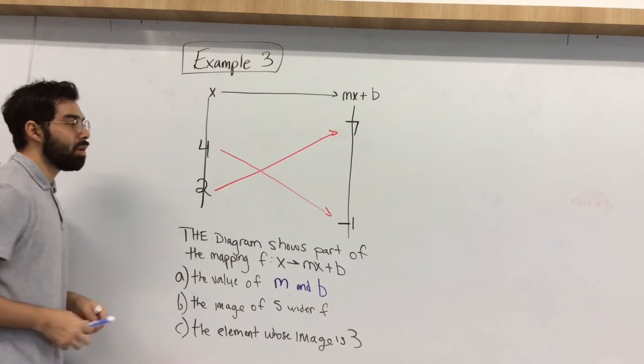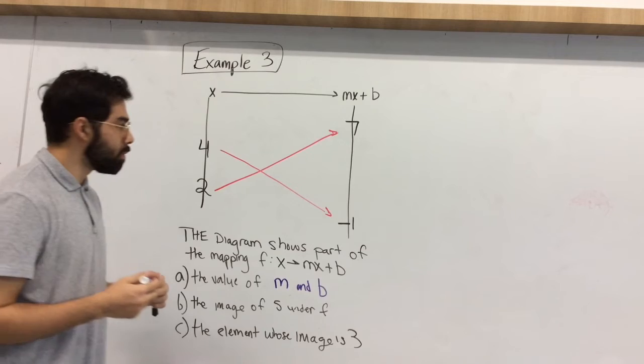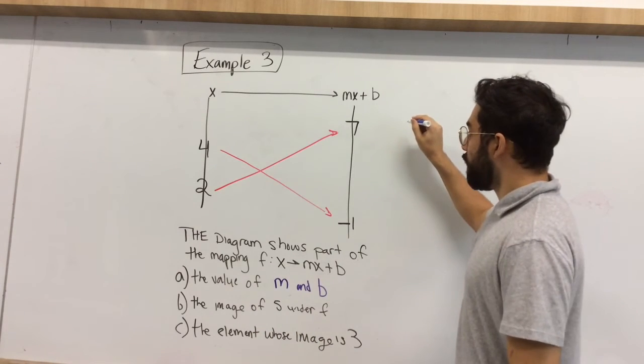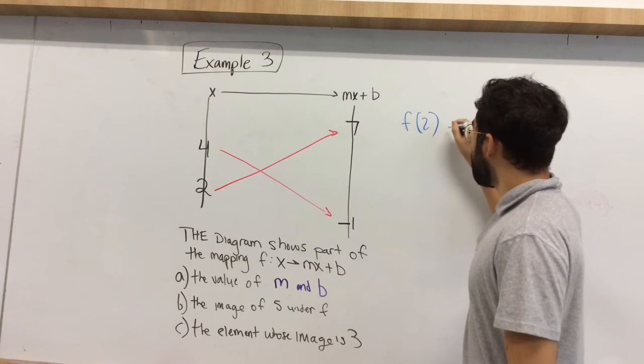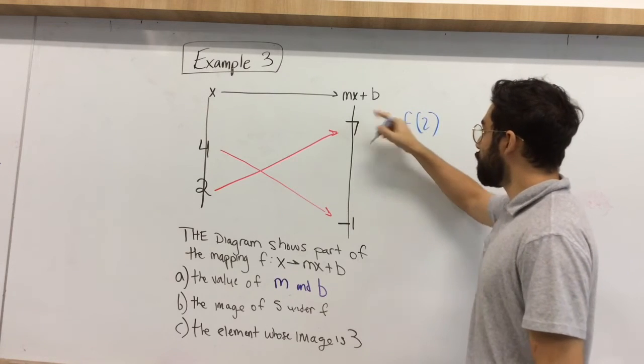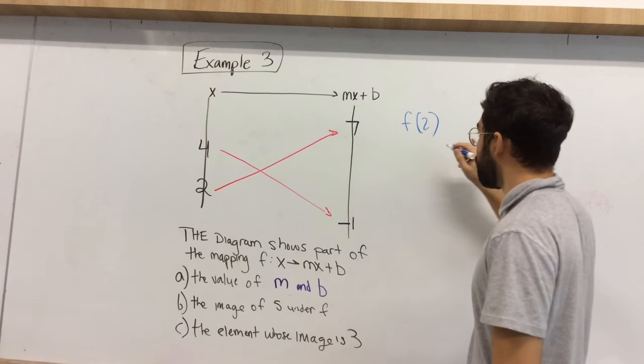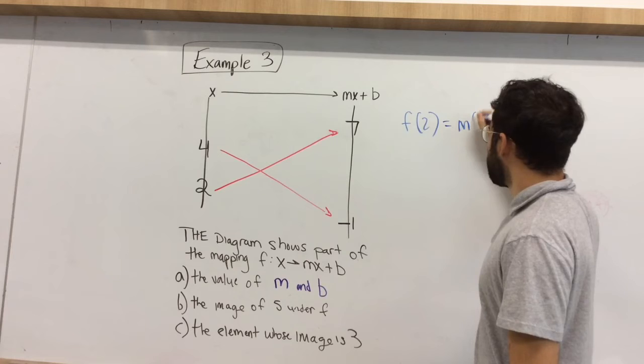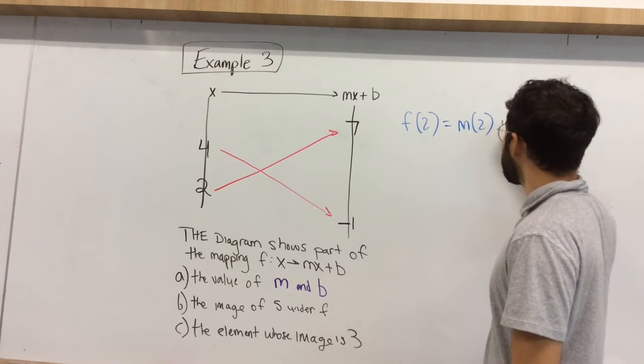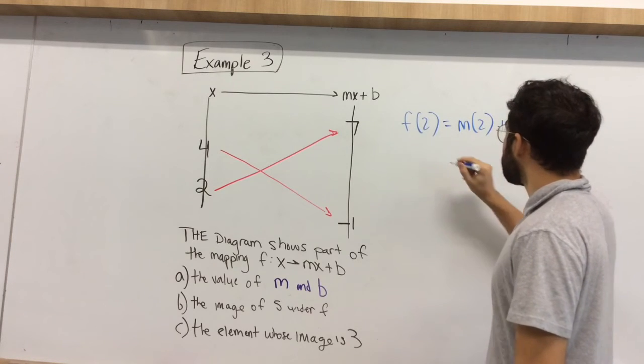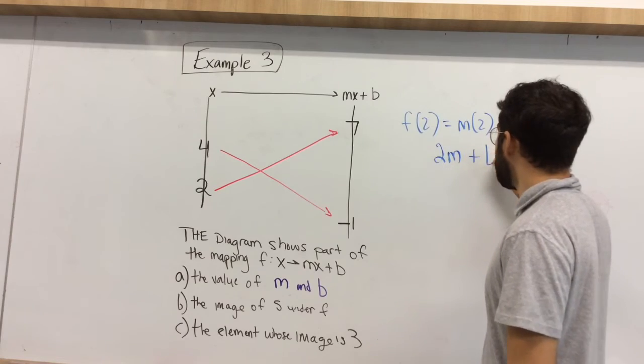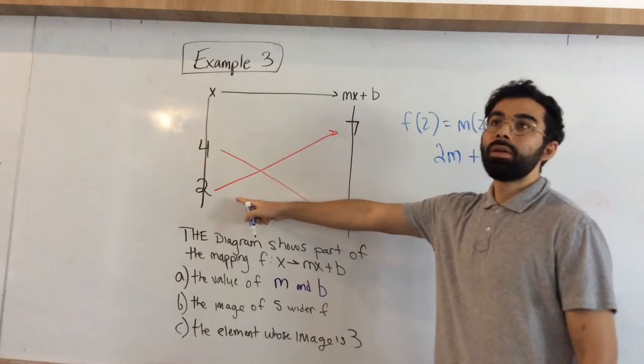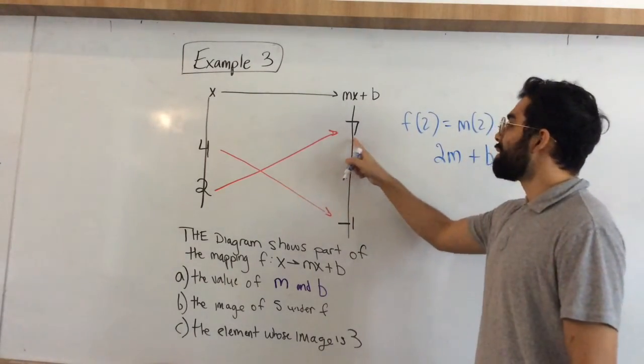The following question we have to answer is, the diagram shows part of the mapping function of x being mapped into mx plus b. What is the value of m and b? We have to take advantage of our inputs and outputs. So we have f of 2 being mapped into this function and getting the output of 7. So f of 2, that would mean m, plug in 2 for x, plus b, that would mean 2m plus b is equal to what? Well, if I plug in 2, I end up getting 7 as my output.